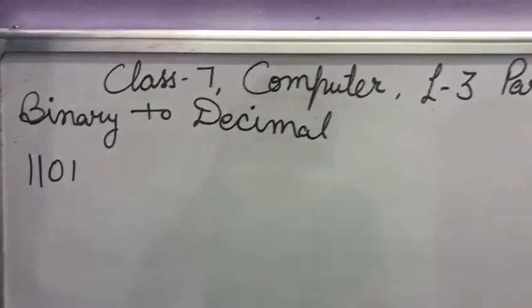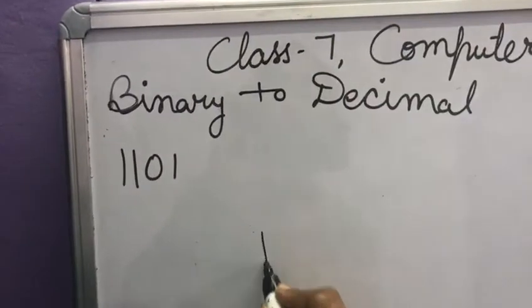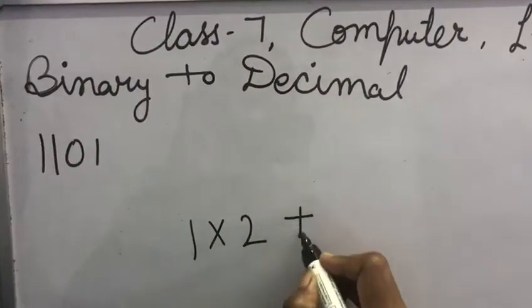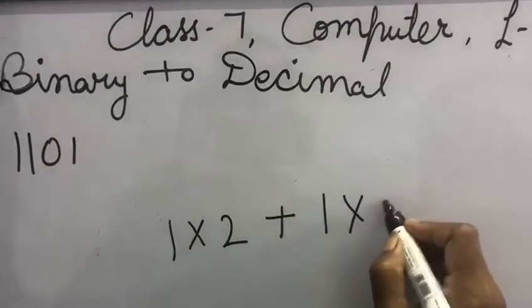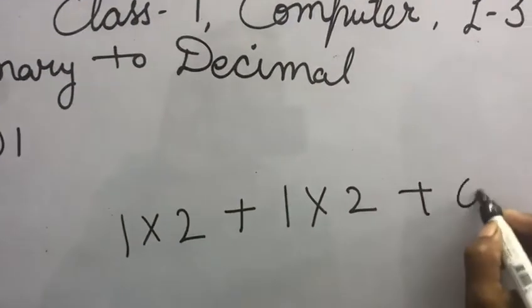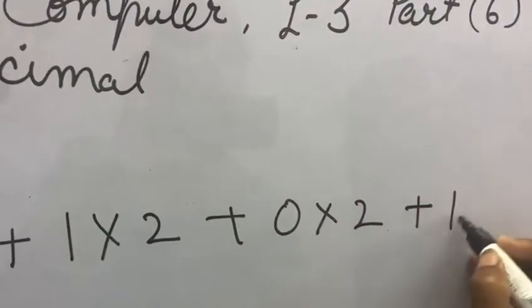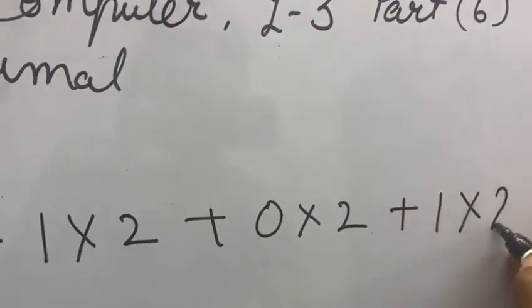The first step is to multiply each digit with 2 and put add sign. Third digit is 0 multiply with 2. Fourth digit is 1 in our question and multiply with 2.